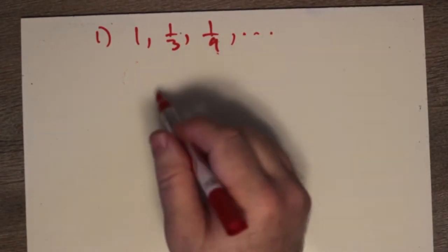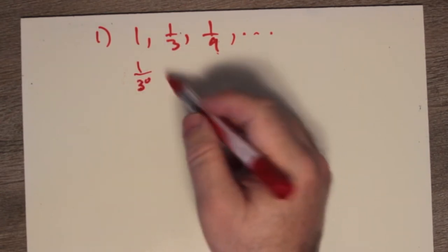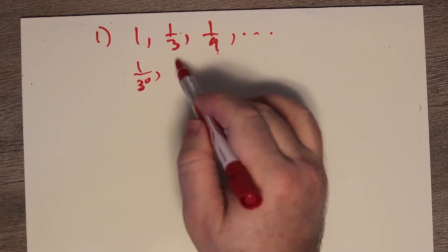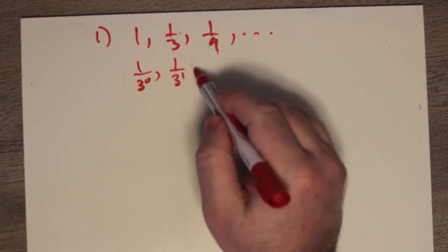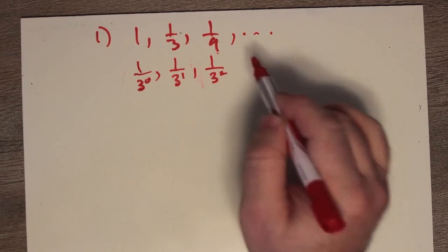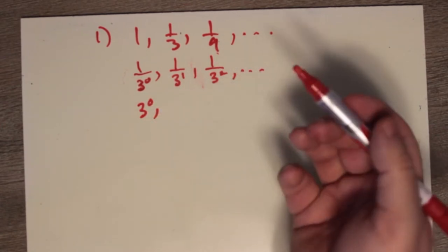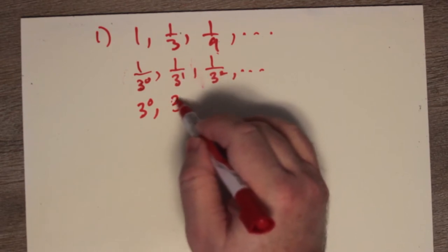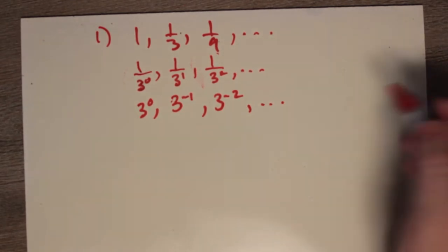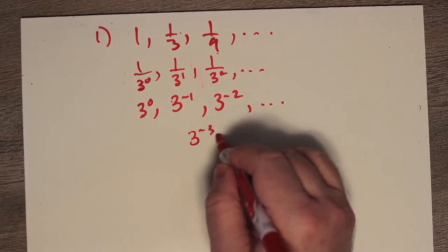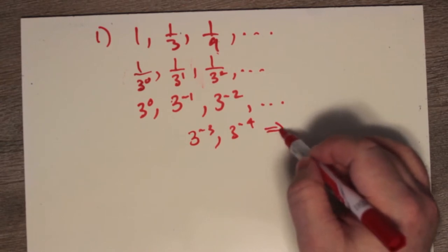For the first question, we have 1, 1/3, and 1/9. This is like 1 over 3 to the 0, because 3 to the 0 is 1. Then 1 over 3 to the 1, which is 1/3. And 1 over 9, which is the same as 1 over 3 squared. We could write this as 3 to the 0, 3 to the minus 1, and 3 to the minus 2. So to fill in the last two terms, we must have 3 to the minus 3 and 3 to the minus 4.